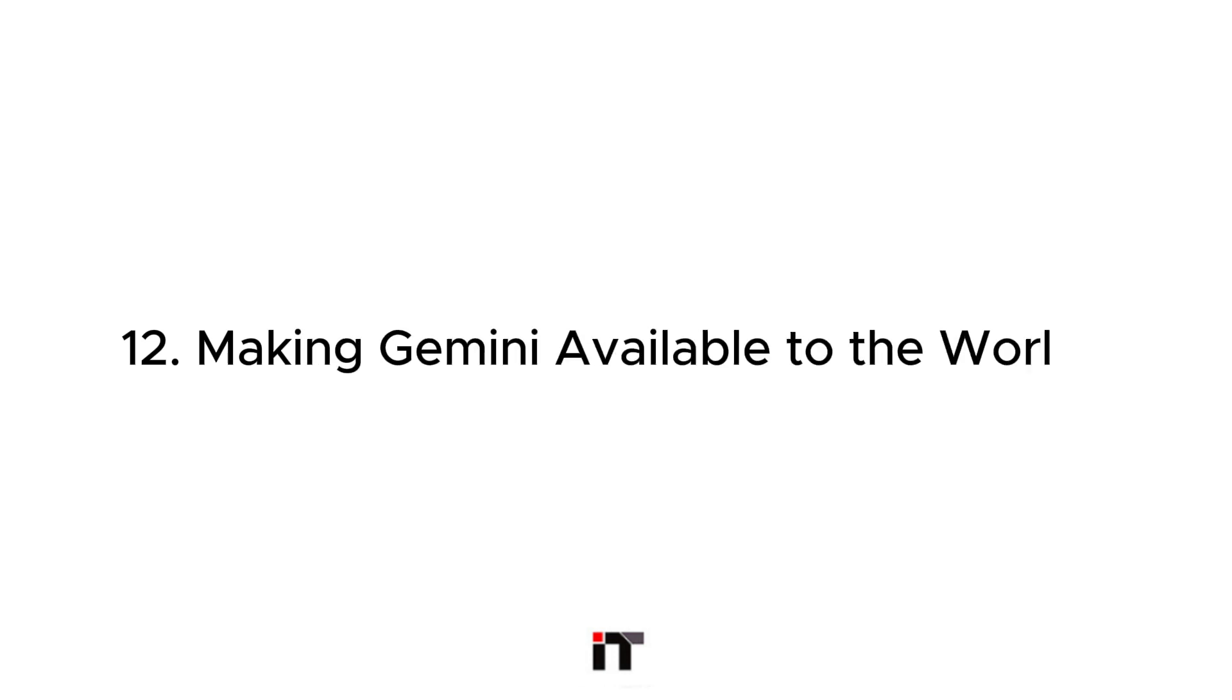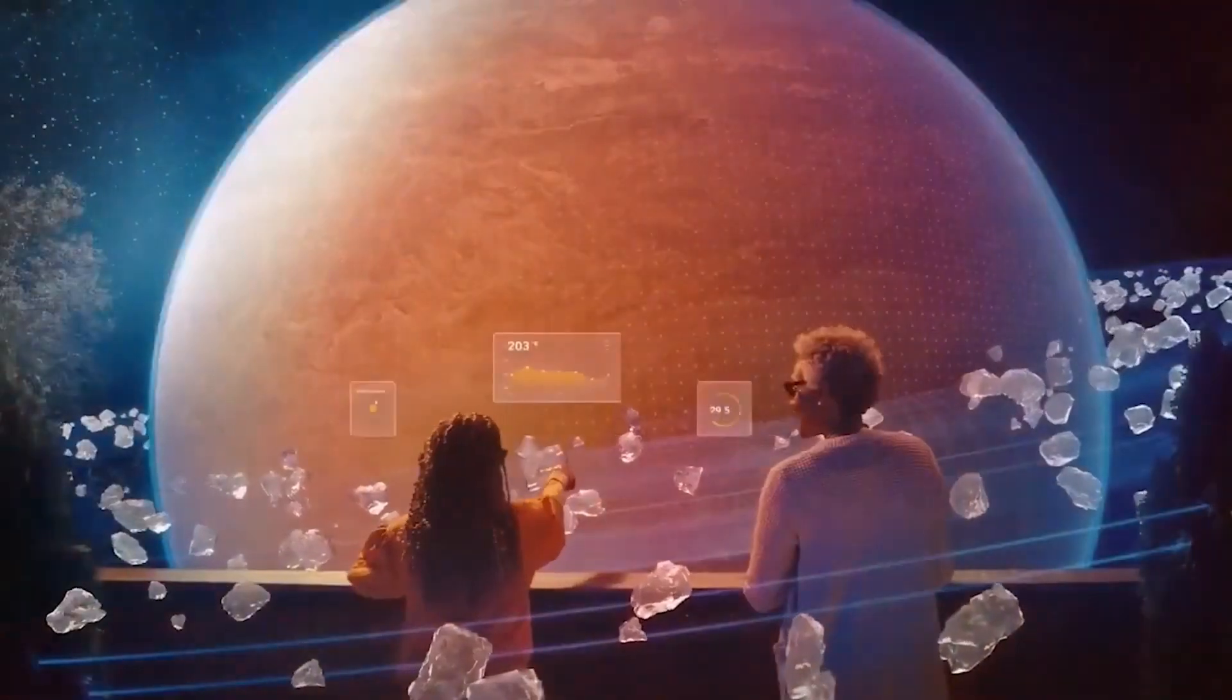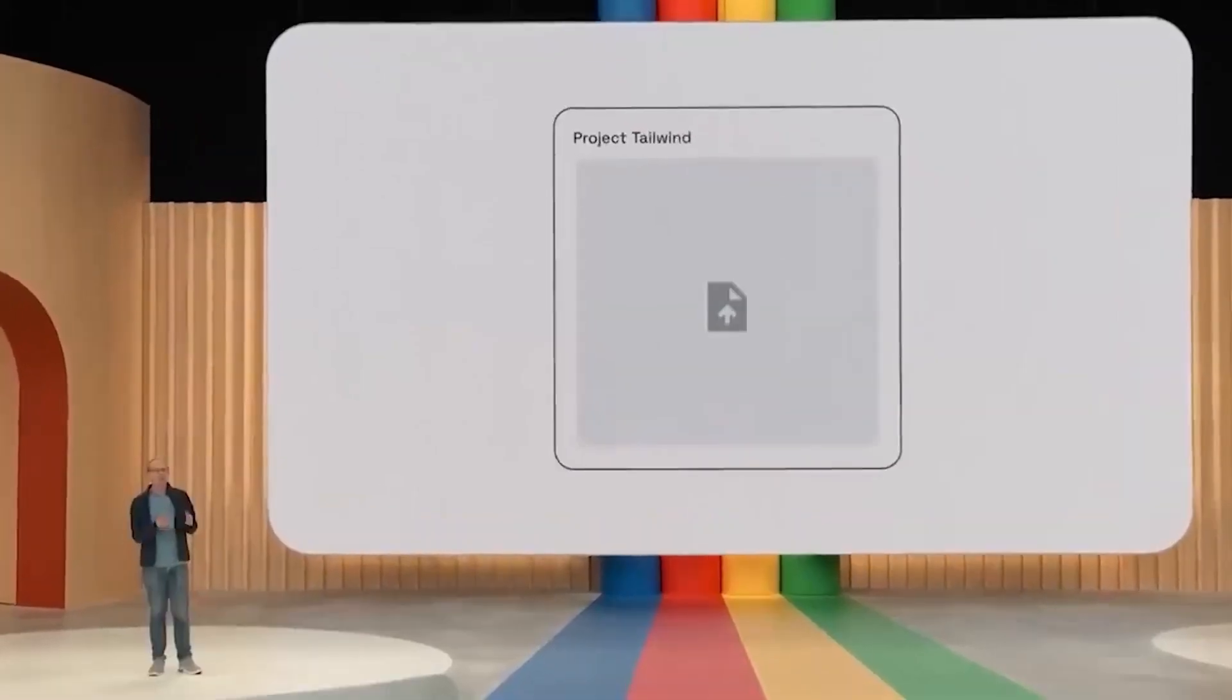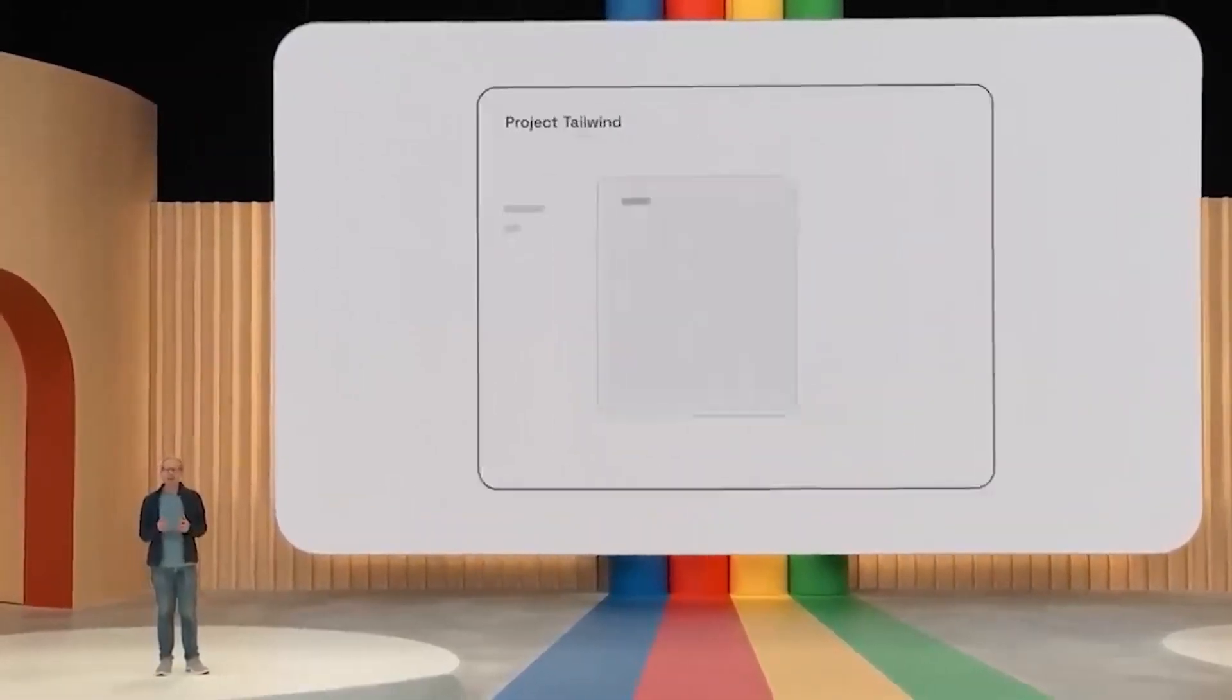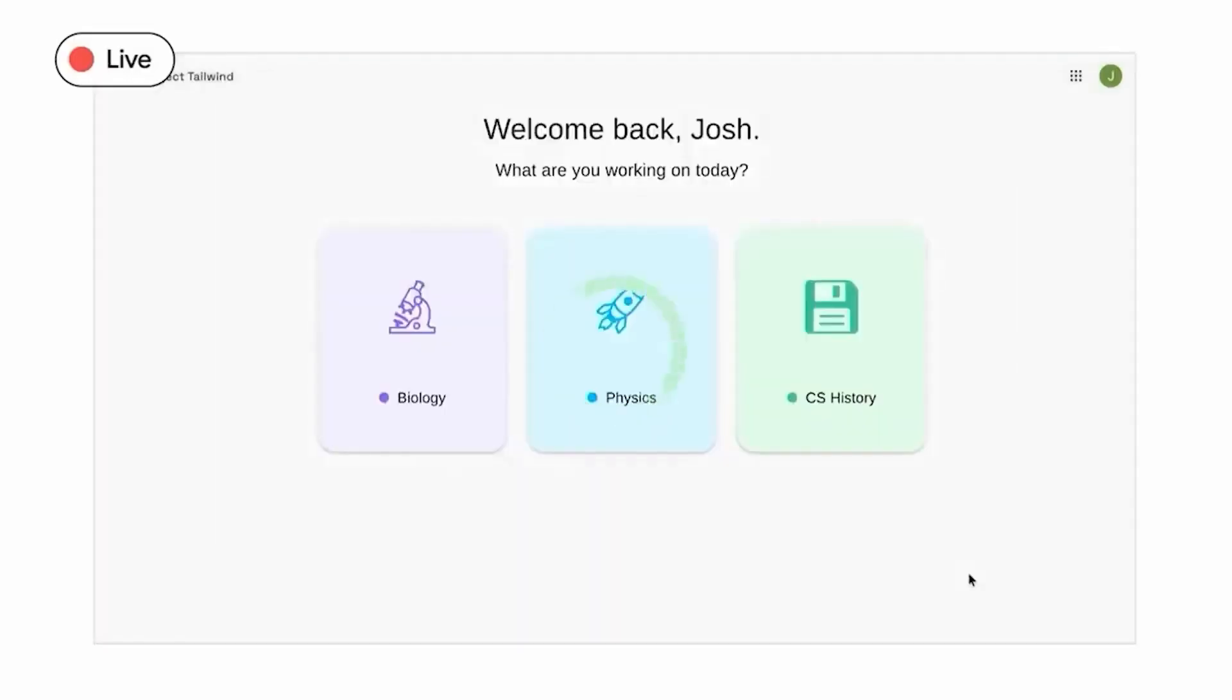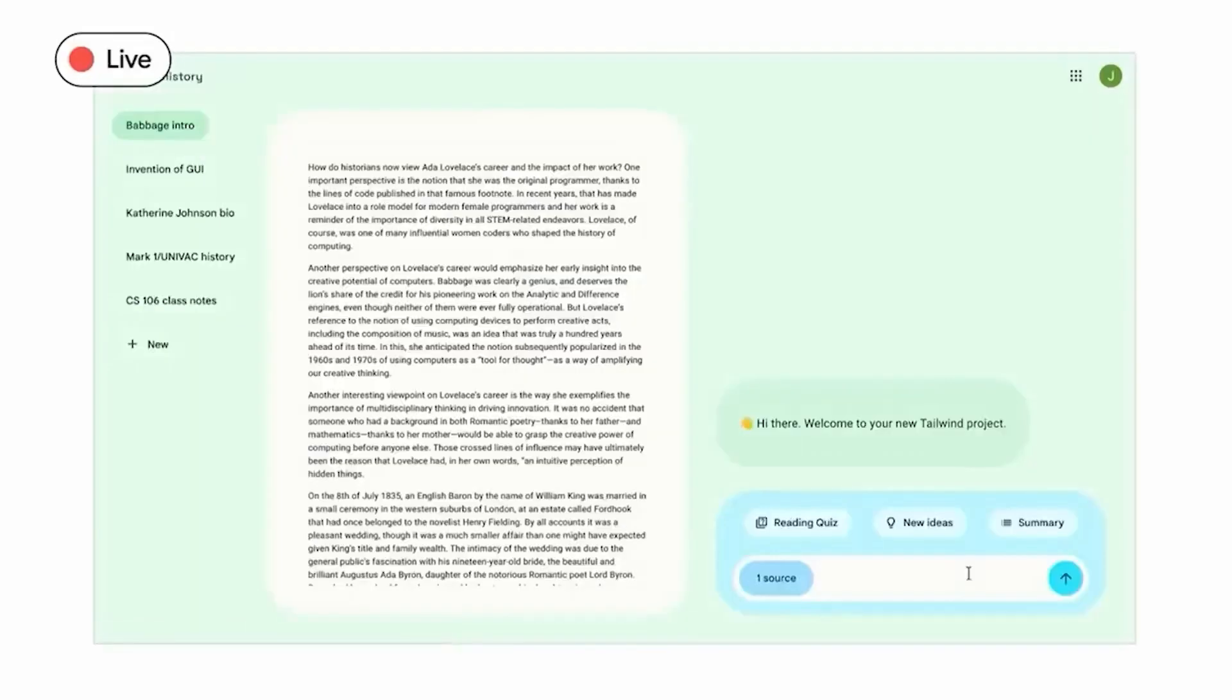Number 12, Making Gemini Available to the World. Gemini is rolling out across Google products from Bard to Pixel devices, enhancing Google's suite of services with its advanced capabilities.